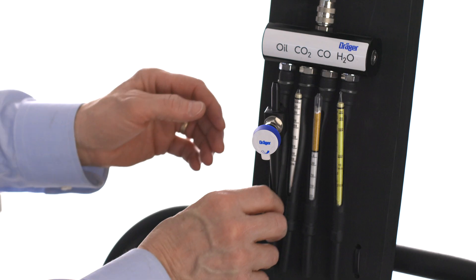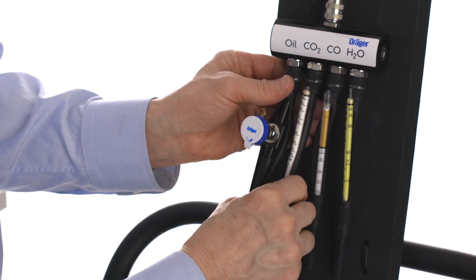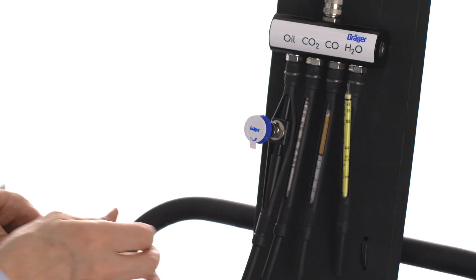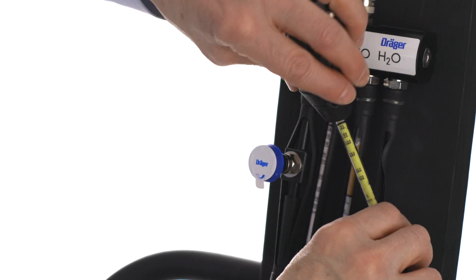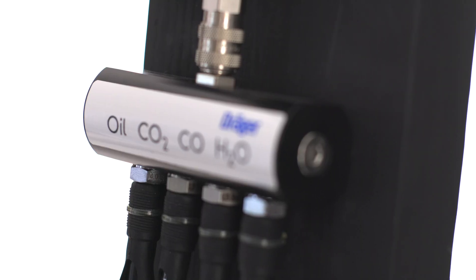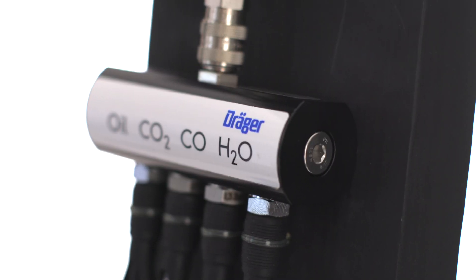Start a 5 minute timer and immediately connect the oil impactor and the tubes, except the water vapor, to the inlet of the holder. Then use the tube opener to remove the tip from the water vapor tube and connect to the inlet of the holder. The oil, carbon dioxide, and carbon monoxide tests are complete in 5 minutes and the water vapor in 10 minutes.